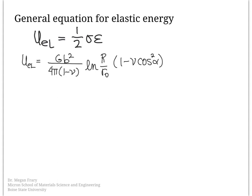Here's what the equation looks like. The elastic energy associated with a single dislocation includes G, the shear modulus, b the Burgers vector, divided by 4π times (1 − ν), where ν is the Poisson's ratio. Then we have the natural log of R divided by R₀.